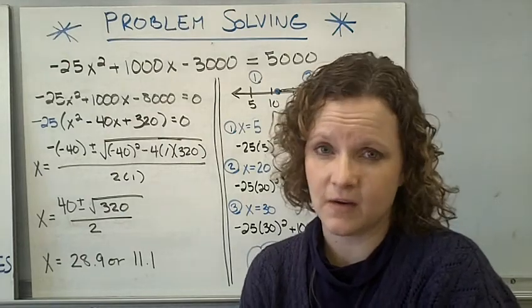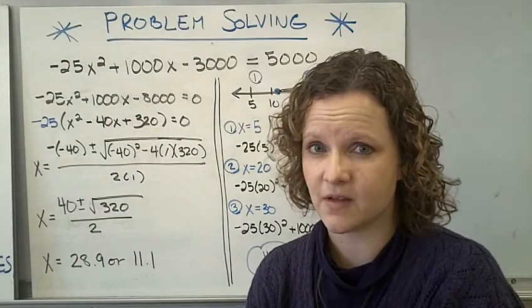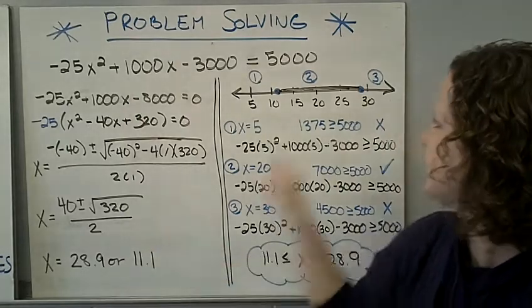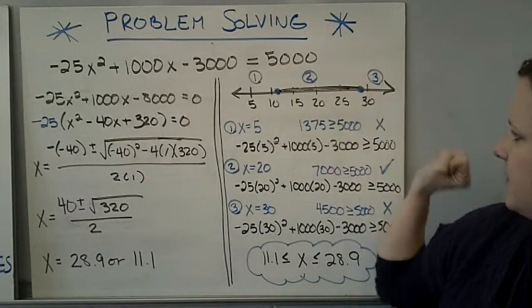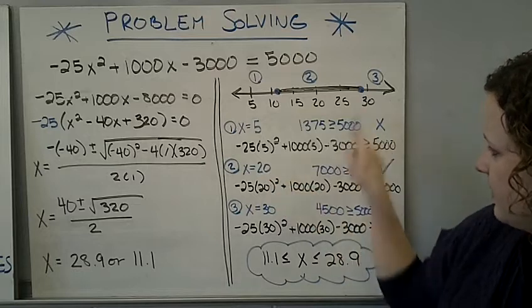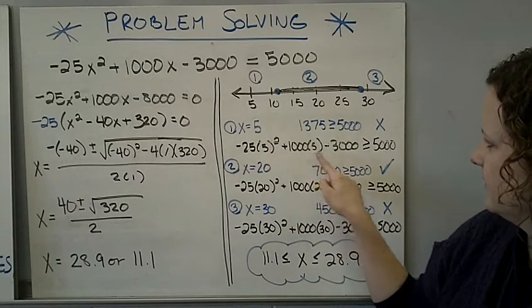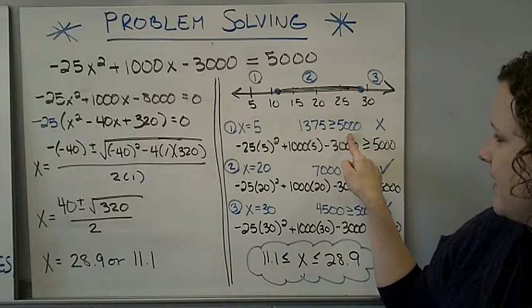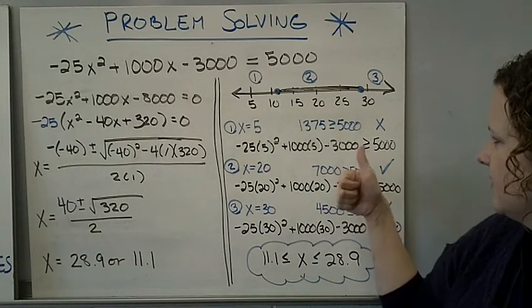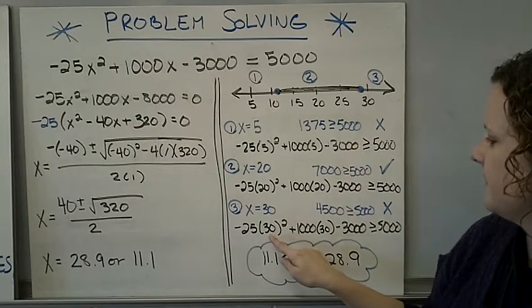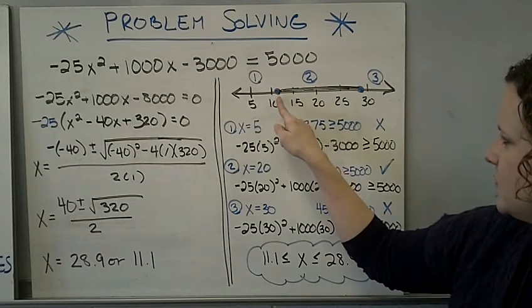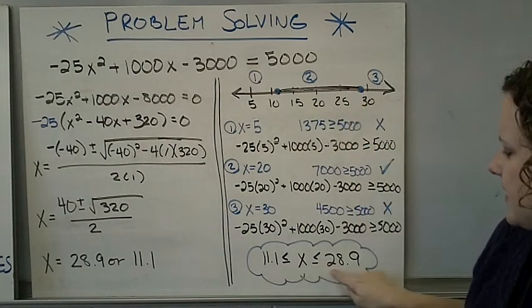But we're not done, because it's an inequality. So we need to set up our critical values on our number line. Critical value of 11.1. Critical value of 28.9. Region 1, region 2, region 3. I picked 5, I picked 20, and I picked 30. Plug 5 in. I got 1,375. Is that bigger than 5,000? No. Plugged in 20. I got 7,000 greater than 5,000. We're good. Picked 30. Plugged in 30. I got 4,500 greater than 5,000. No. So the answer is between 11.1 and 28.9. And that is how I got my answer.